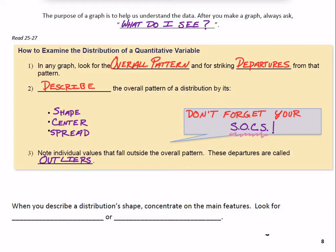Let's talk about shape for a moment. When you describe a distribution's shape, concentrate on the main features. Look for symmetry or basically a lack of symmetry. We call it skewness. Look for those two things when we're talking about the shape of a distribution. Symmetry would be like that nice bell-shaped curve that we see. Skewness, that kind of would be the U.S. women's soccer graph above. That one wasn't symmetric at all.